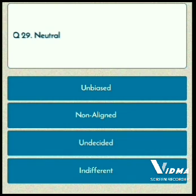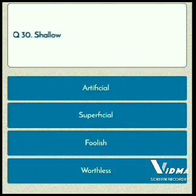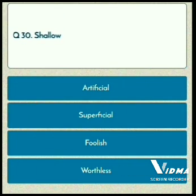Four options are given, we have to pick out the correct one: unbiased, non-aligned, undecided, indifferent. The correct answer is unbiased. And the last one — number 30 — shallow. Which is the synonym of shallow? Artificial, superficial, foolish, worthless. The correct answer is superficial.